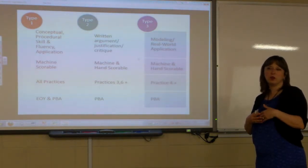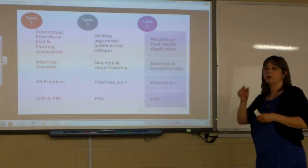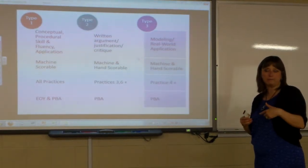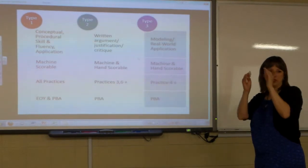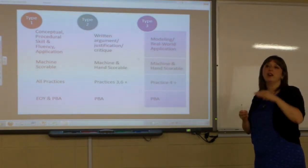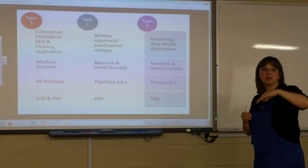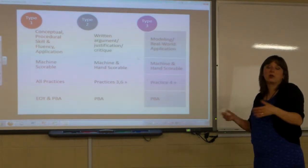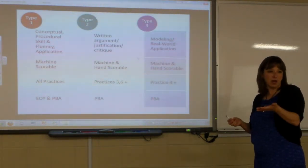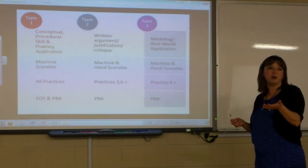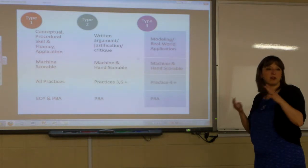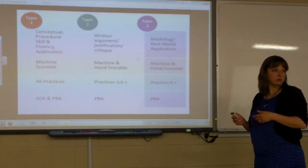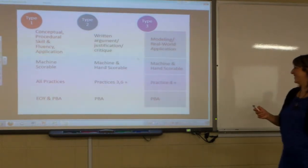I went through the evidence tables, highlighted green, yellow, and blue, and matched them to the model curriculum scope and sequence — identifying which items are on the PBA versus the EOY. Everything on the PBA needs to be covered in the first three quarters of the year. We're looking at adjusting Math 1 so the model curriculum adequately prepares students for the PBA, but the changes won't be dramatic.